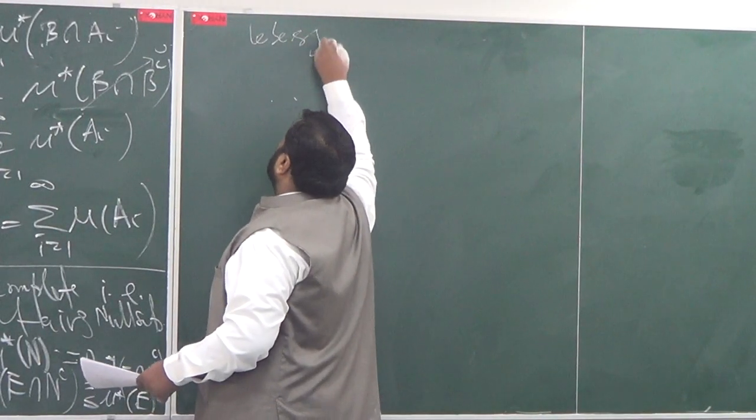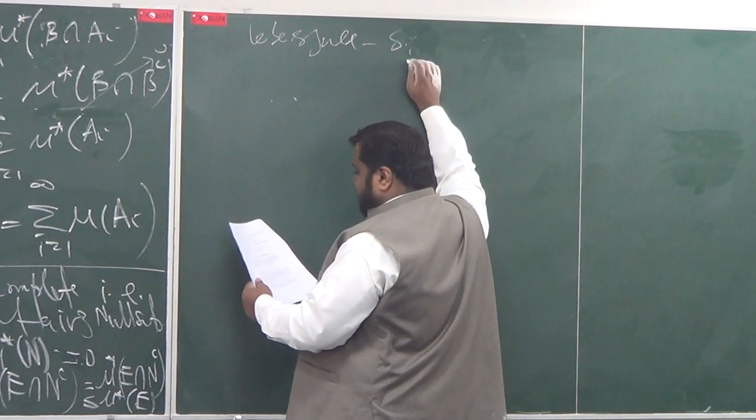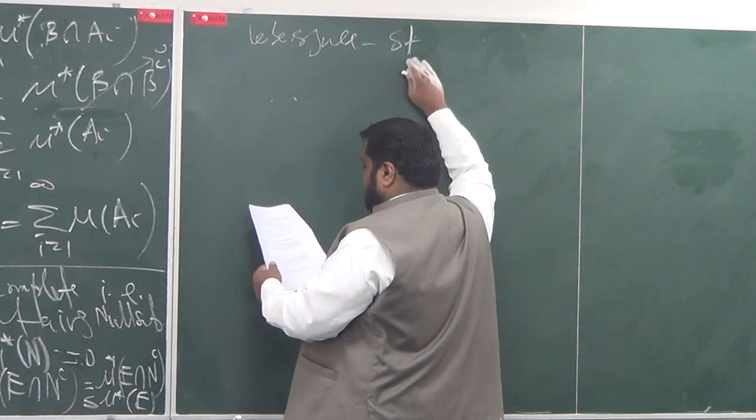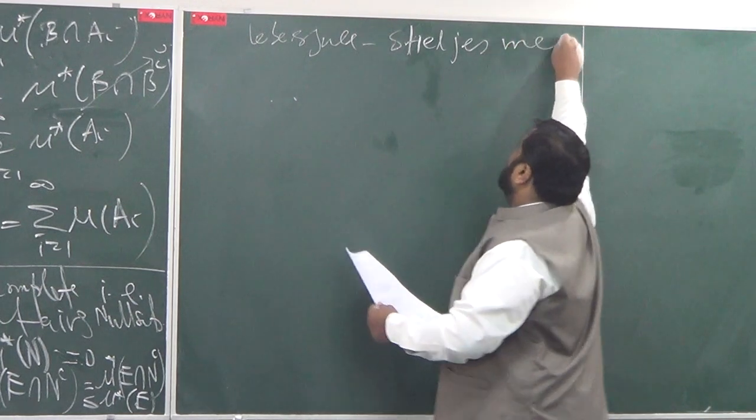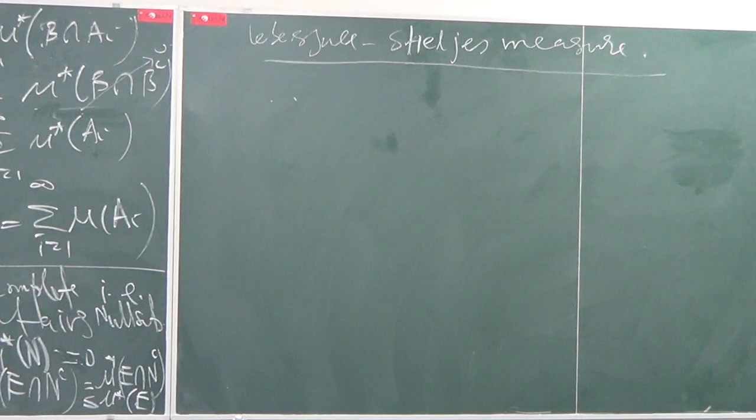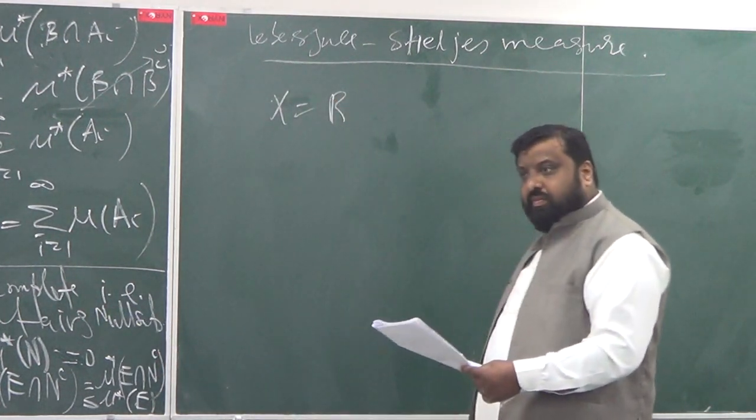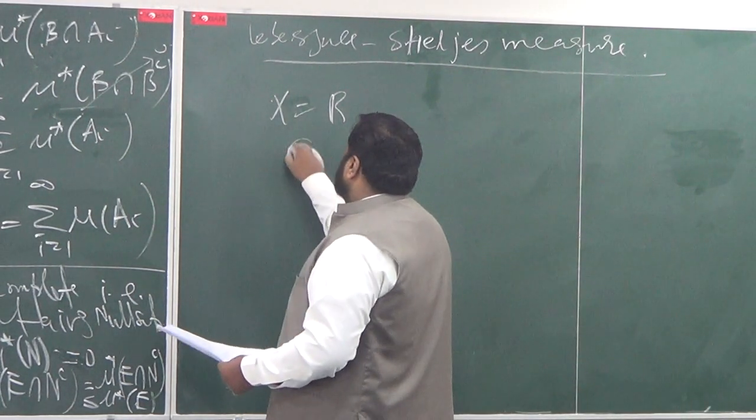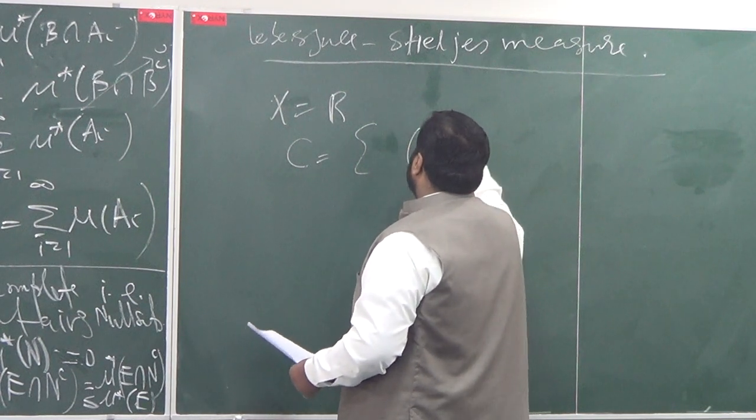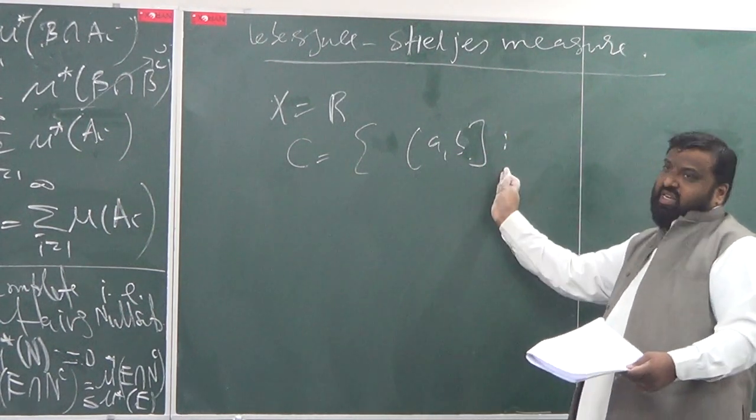Let me talk about Lebesgue measure. Lebesgue-Stieltjes measure, and Lebesgue measure is a particular case. Take X equal to R, and take C be the collection of all intervals of this form [a,b). I can take open interval, closed from this side and open from this side, makes no difference.